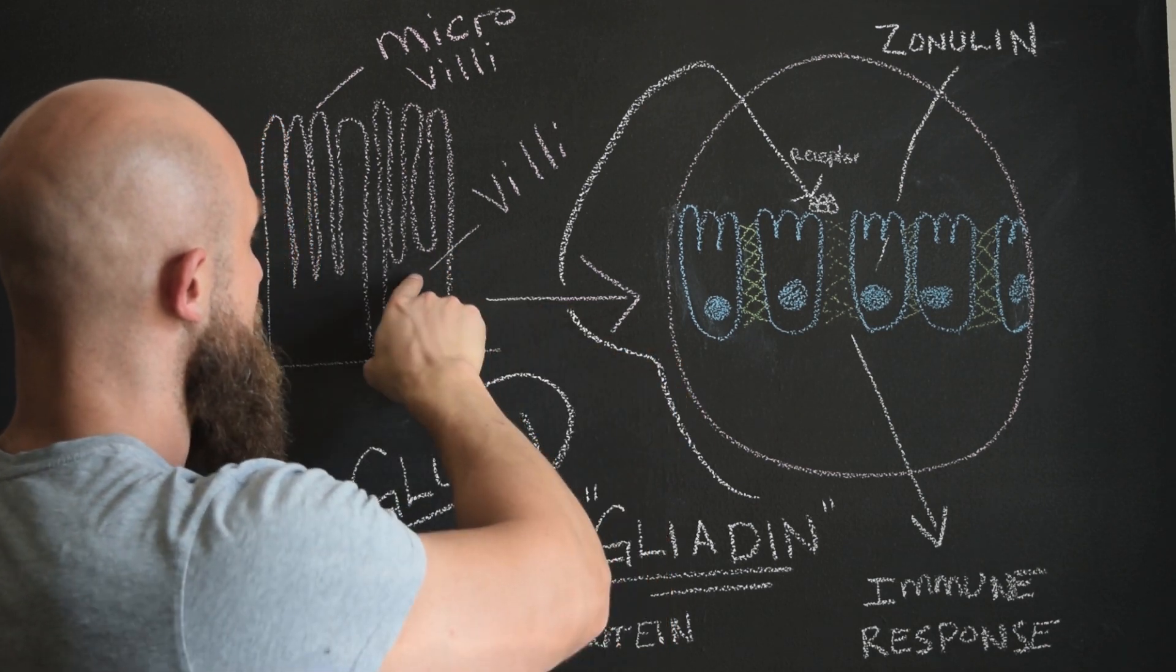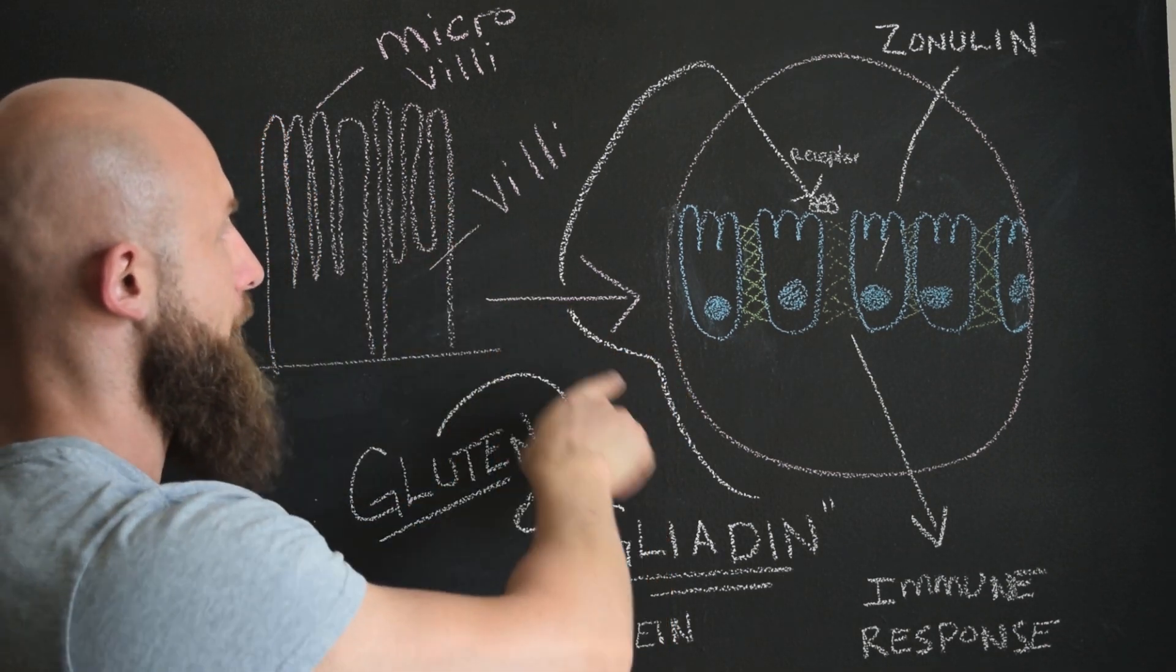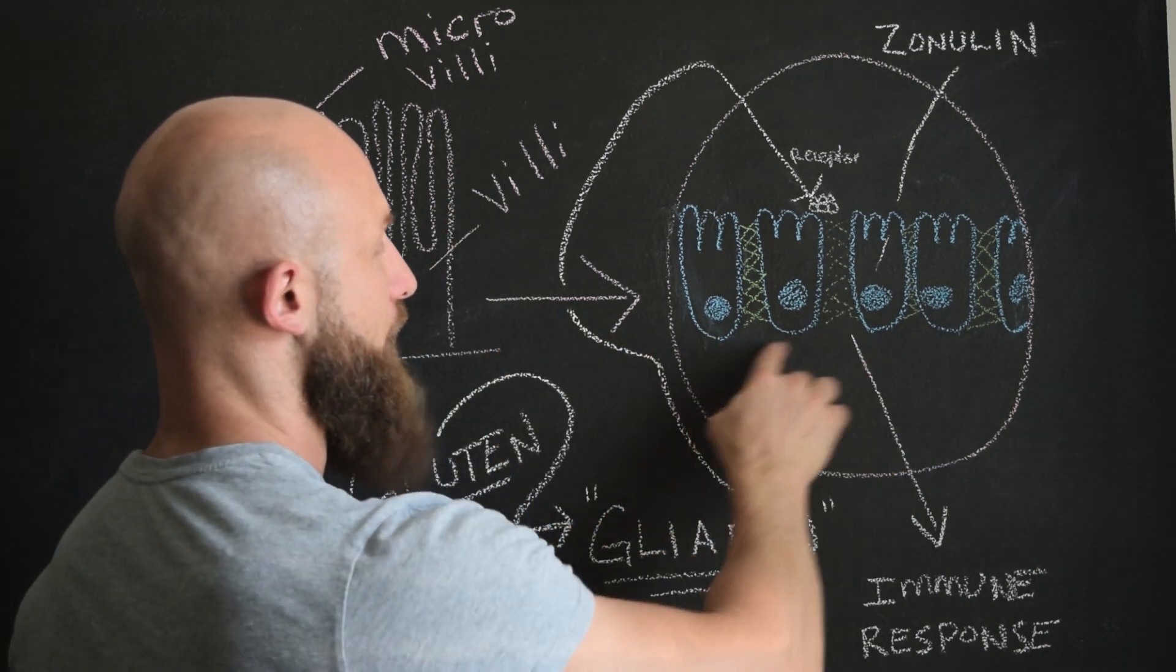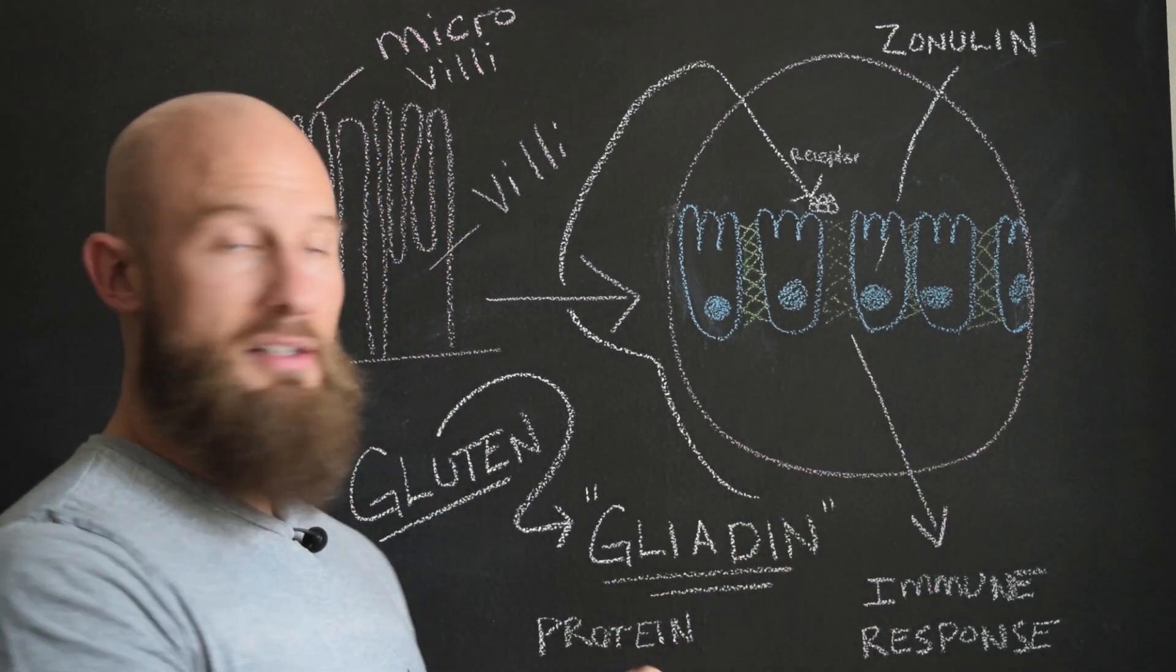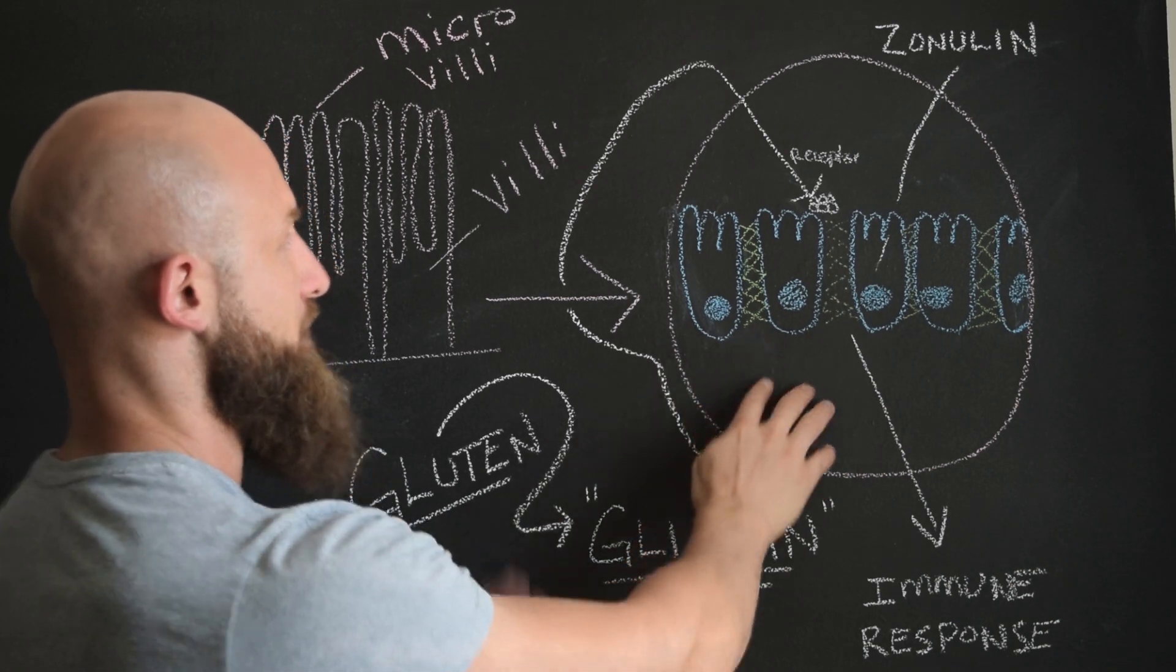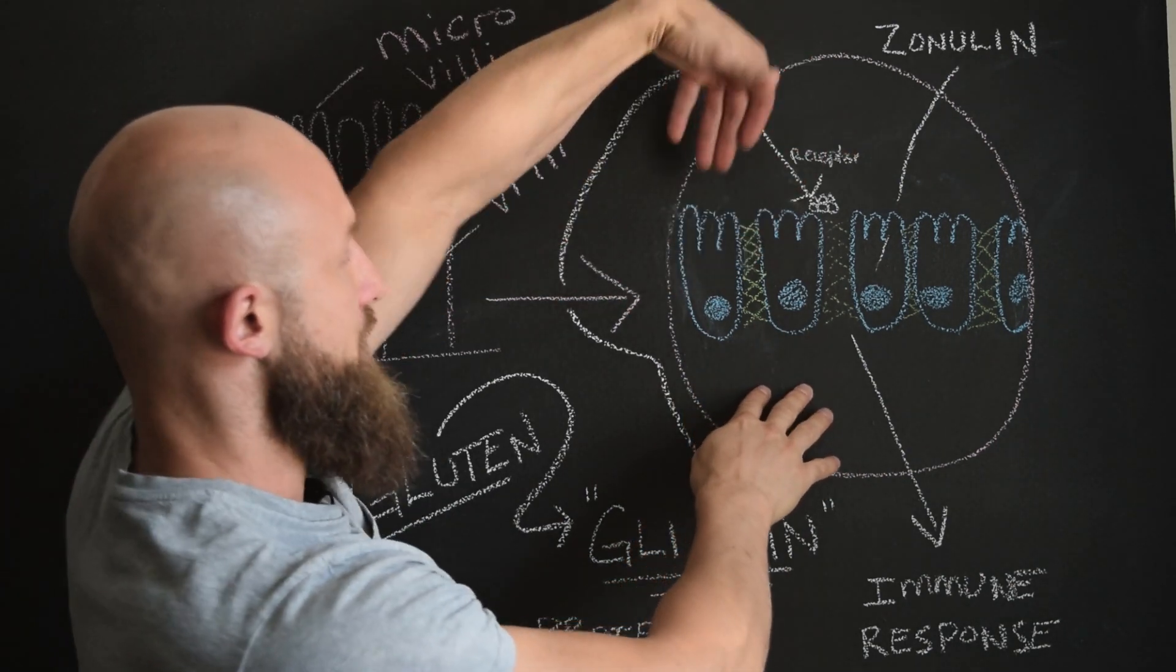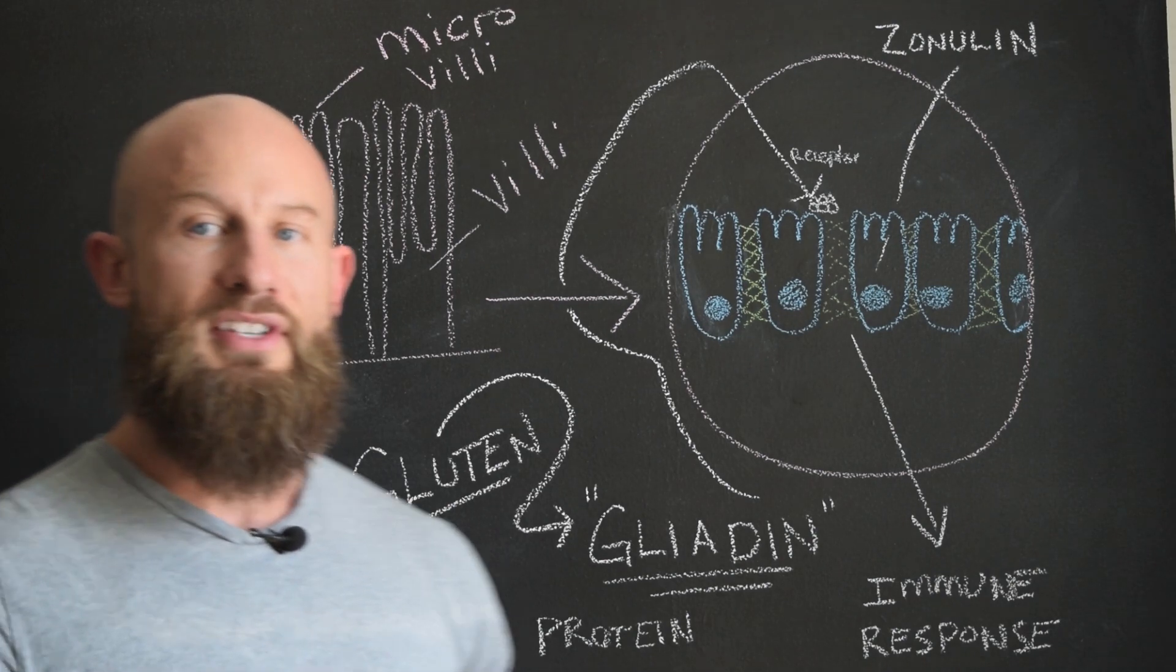If you magnify these villi and microvilli, that's what we're looking at here. And these are individual cells, epithelial cells, and they line the intestine. And obviously, you can flip that up, there are other of these cells on the other side.